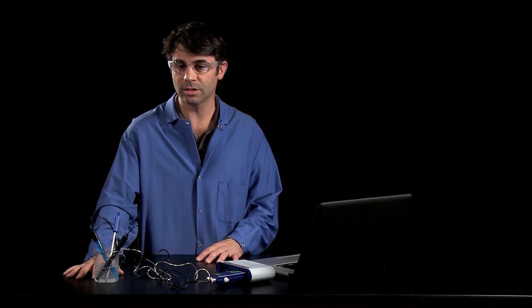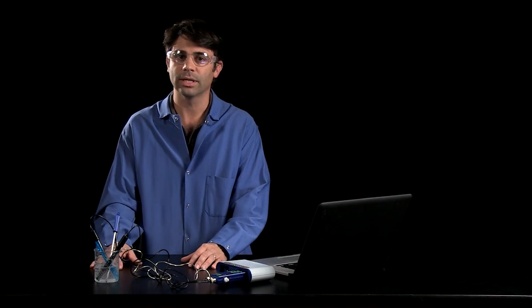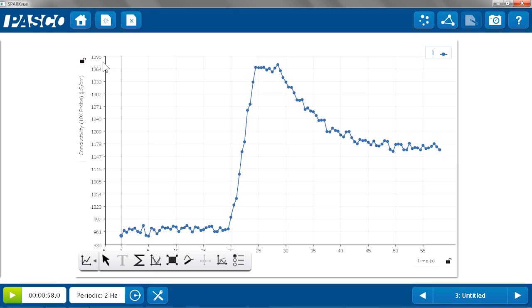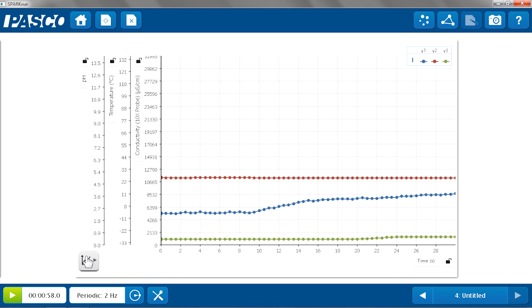You can really get at a lot of the chemistry concepts with a very simple system as long as you can make all those measurements. And that's what the advanced chemistry sensor allows you to do. Now, the really nice part about this is, since I was making those measurements simultaneously, I can view all of them on one graph. And I can make connections between what was happening in each of those properties. We'll look at our next page and autoscale it.